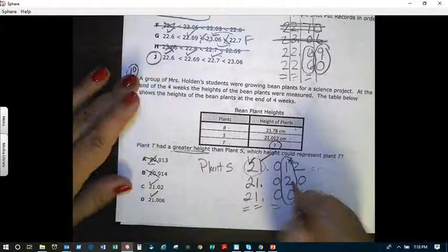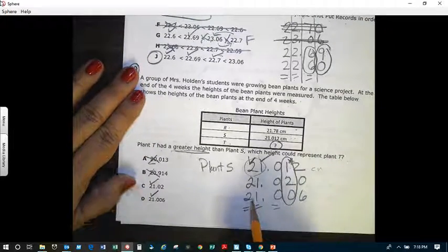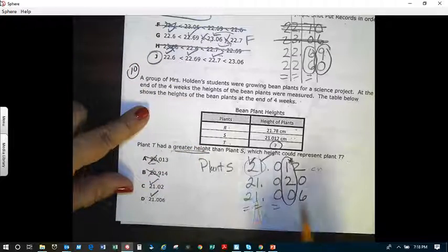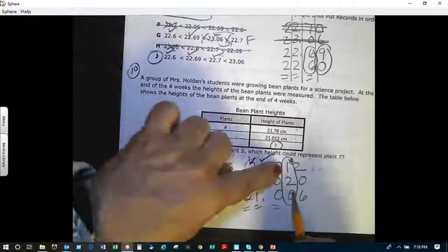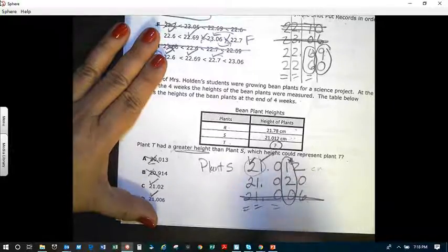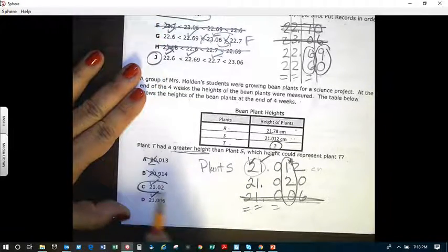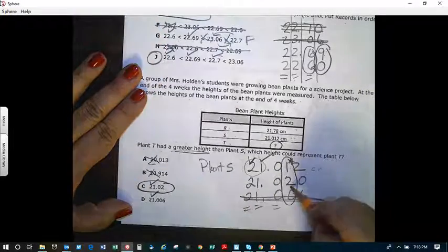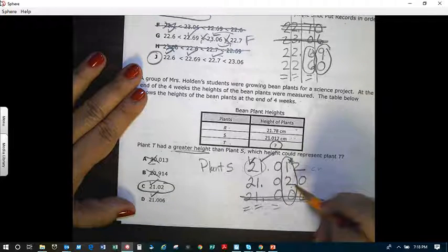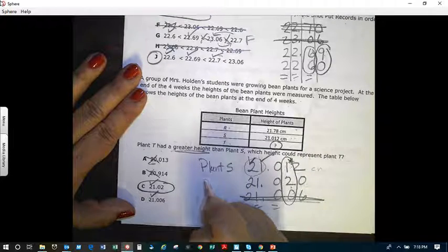So which one grew the tallest? Well, it wasn't 21 and 6 thousandths because that is less than 1. I'm going to cross that out. So the best answer is this one right here because we can determine it in the hundredths place. 2 is greater than 1, so this is going to be plant T.